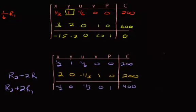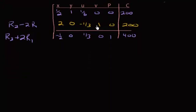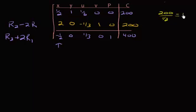Now scan through the bottom row of the updated table. There is a negative 1.5, and it's the only negative, so it's automatically our pivot column. To find the pivot row, divide each constant by its corresponding element from the pivot column: 200 divided by 1.5 is 400, and 200 divided by 2 is 100. The smallest ratio is 100, so the element 2 in that row is our pivot element.